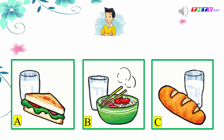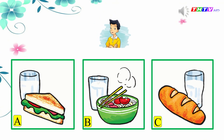Again, please. What would you like to eat? I'd like a bowl of noodles, please. What would you like to drink? A glass of milk, please. So, your answer is A, B, or C? Yes, B. A bowl of noodles and a glass of milk.